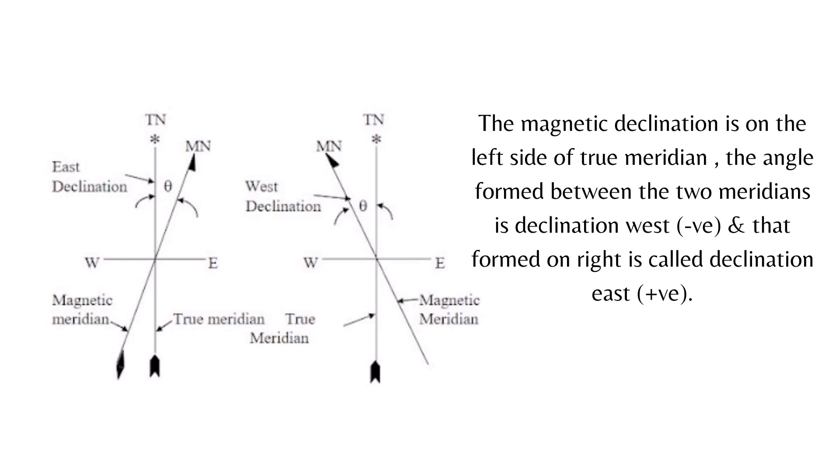The east declination is considered positive and the west declination is considered negative. This sign convention is followed while calculating the true bearing of a particular line.